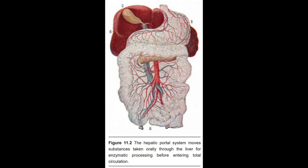One well-known prodrug is psilocybin, a chemical found in magic mushrooms. Psilocybin itself is inactive, but once it is exposed to highly acidic conditions, like the inside of the stomach, it becomes the psychoactive substance psilocin.